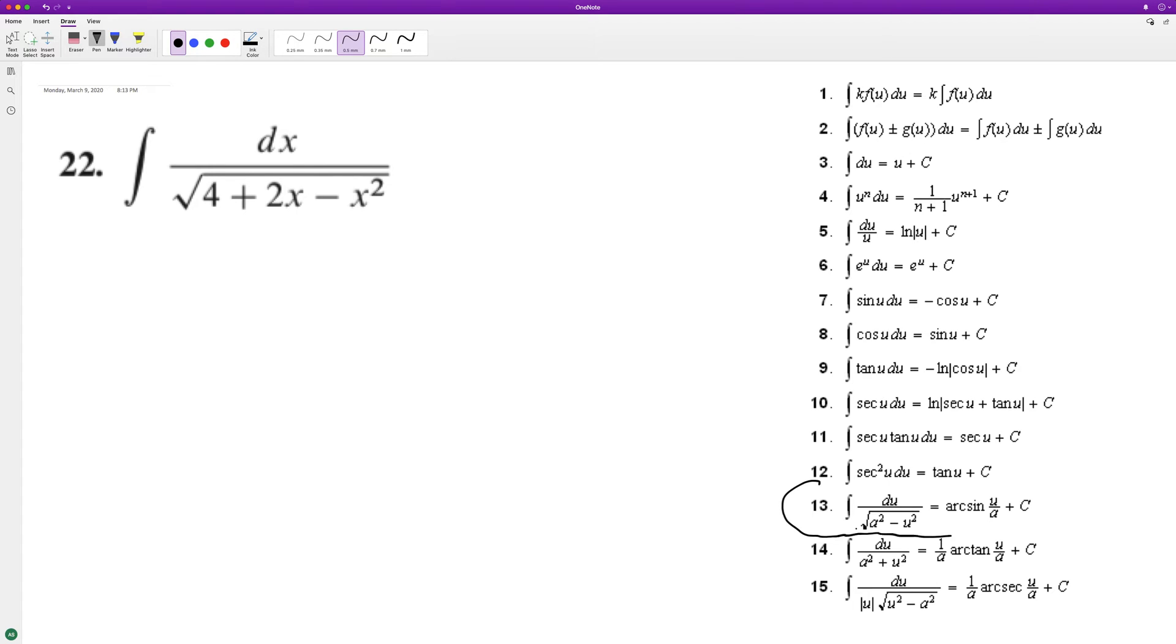So this problem right here, we're going to have to do u-substitution. And this is going to turn into five minus quantity one minus x squared. Because if you multiply this back out, you're going to end up with four plus two x minus x squared.